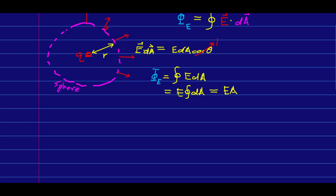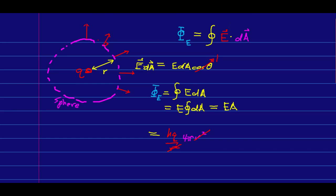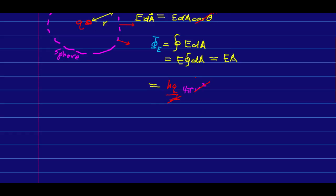And now we're pretty much done, because we know what the field is. Due to a point charge, that field is kq over r squared. And this area is just the area of a sphere, so it's 4πr². Notice the r squareds cancel out, so in fact I would get the same flux no matter what radius sphere I defined. Think about that in terms of the E field lines, it makes sense.